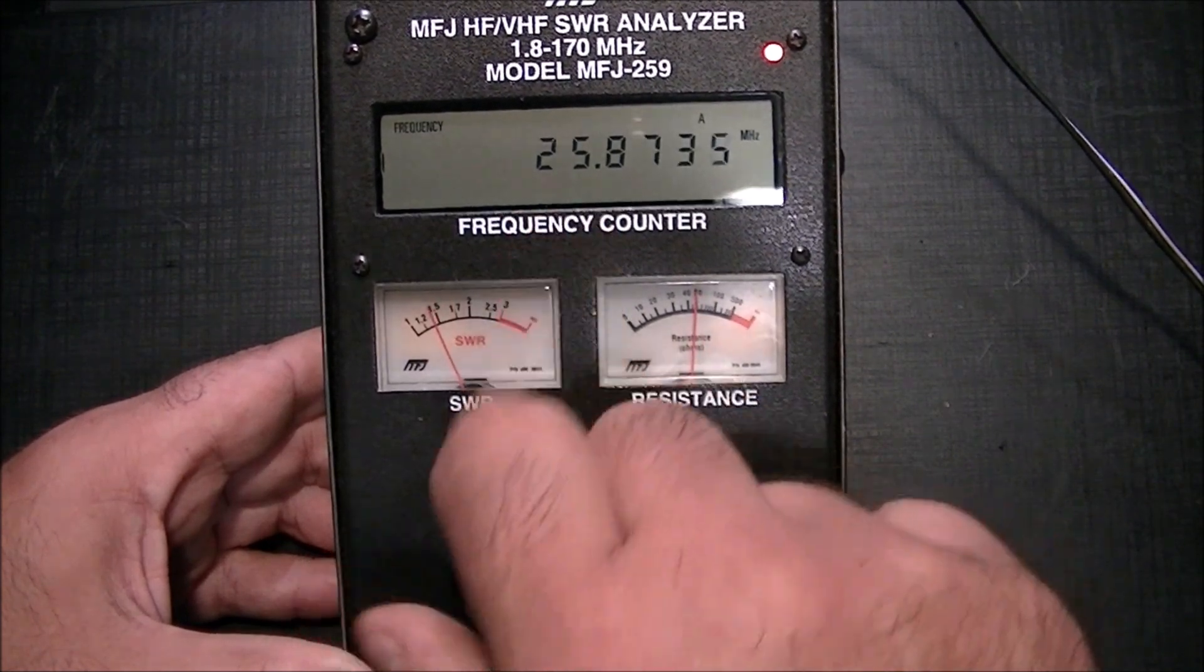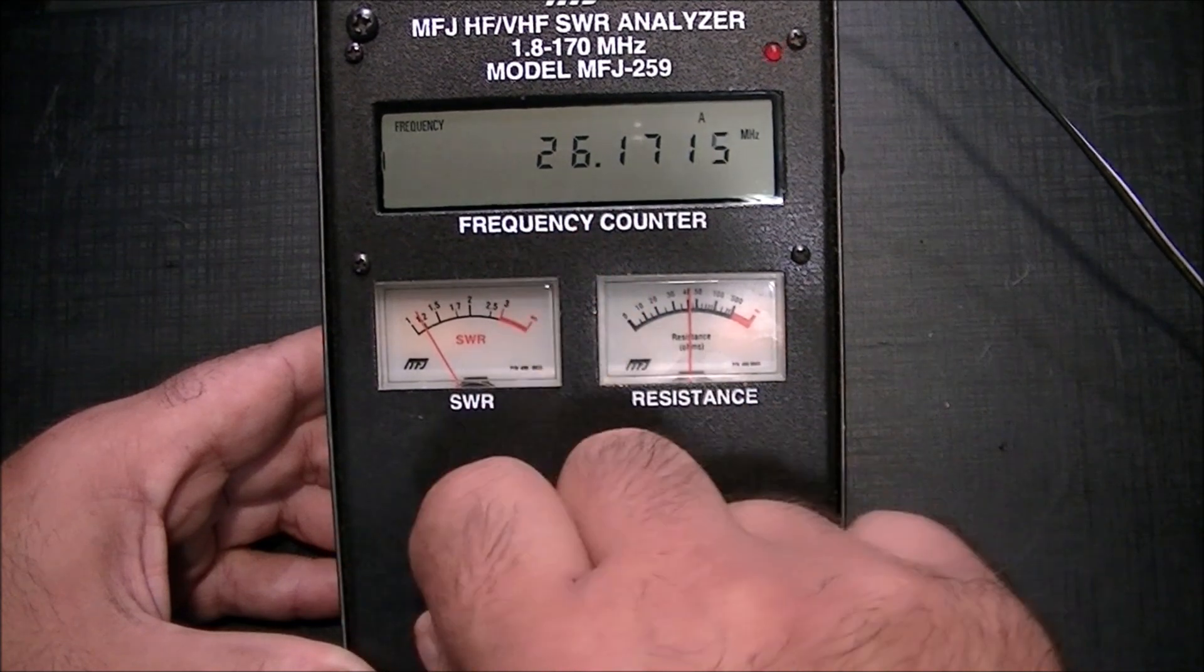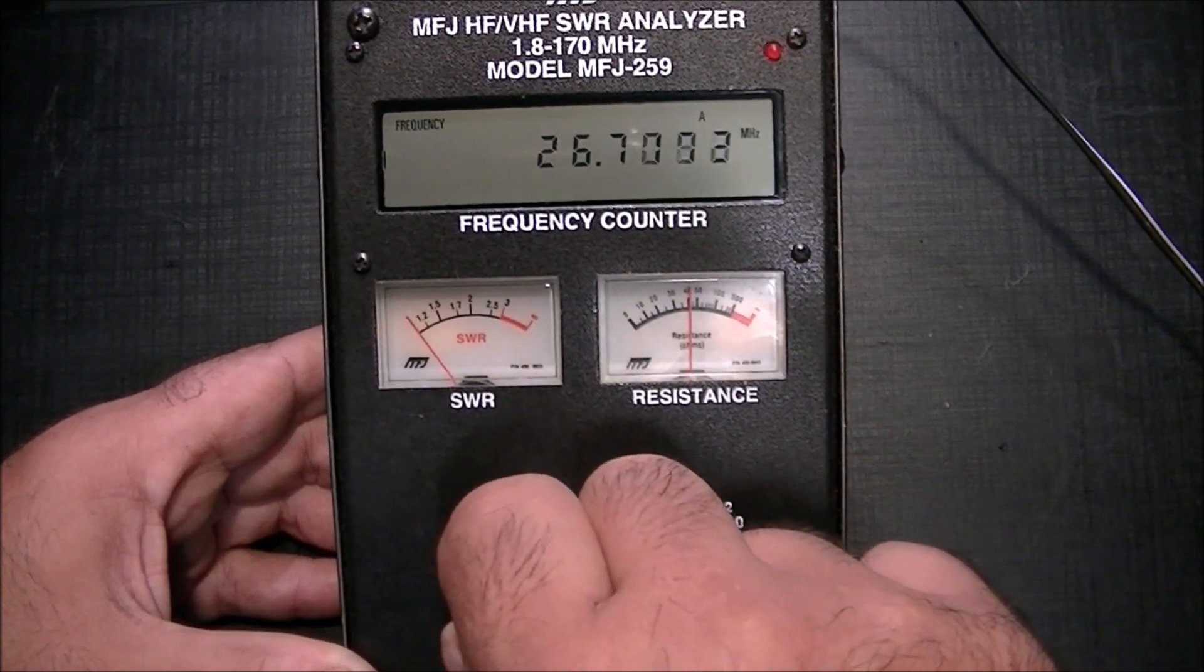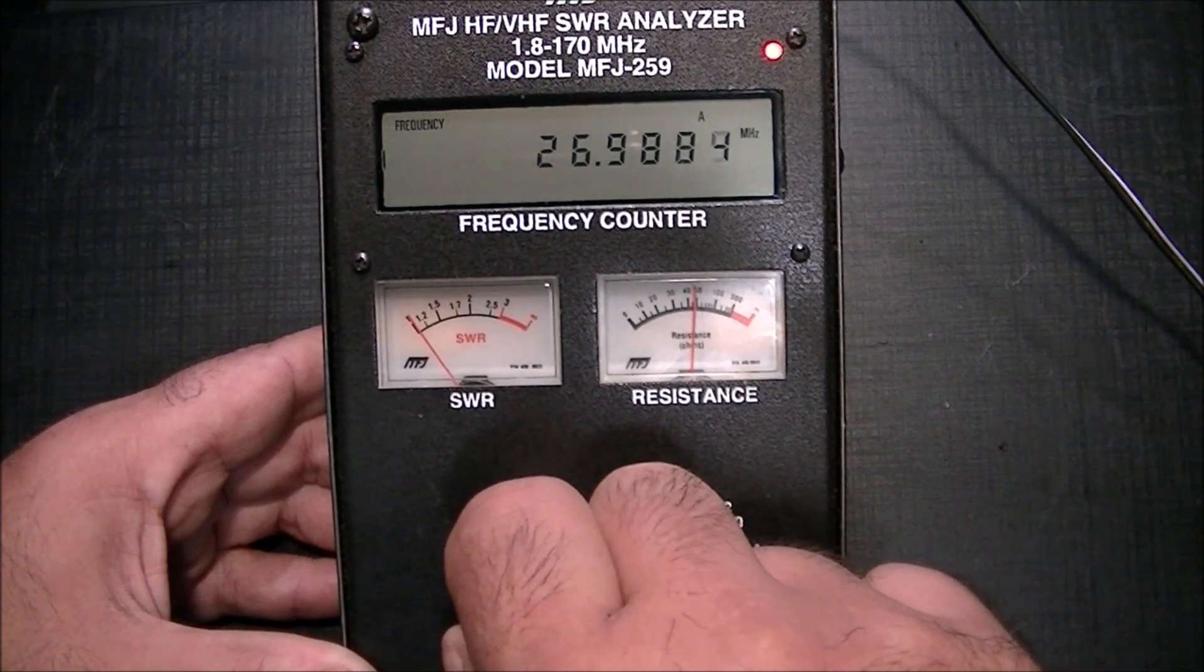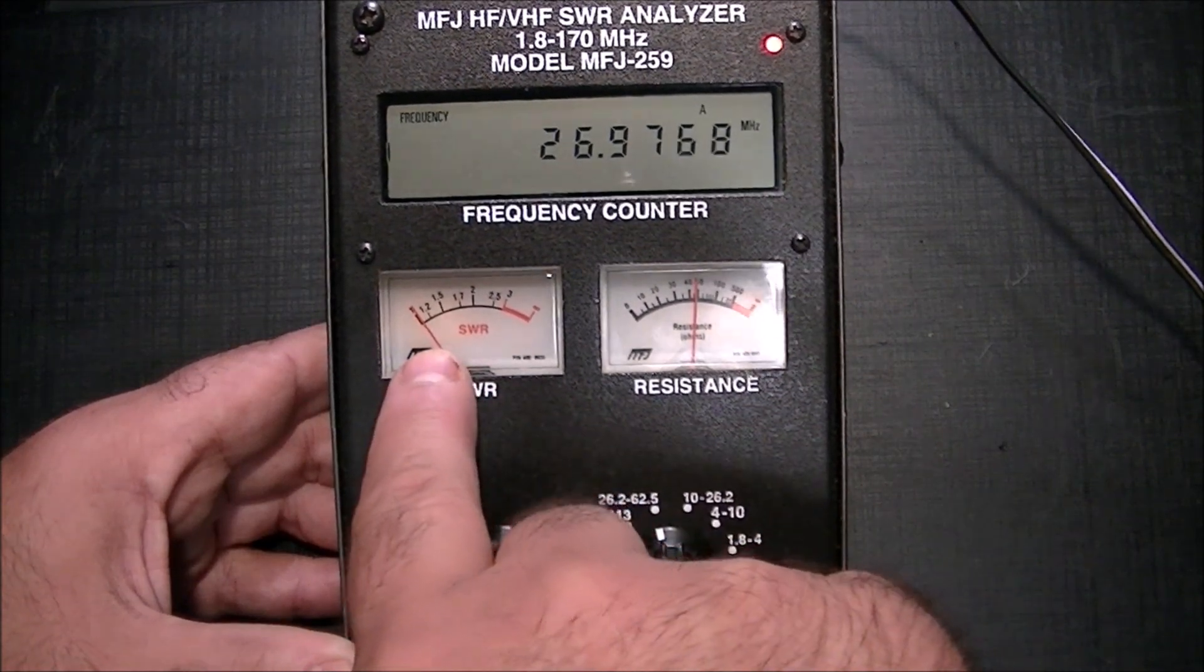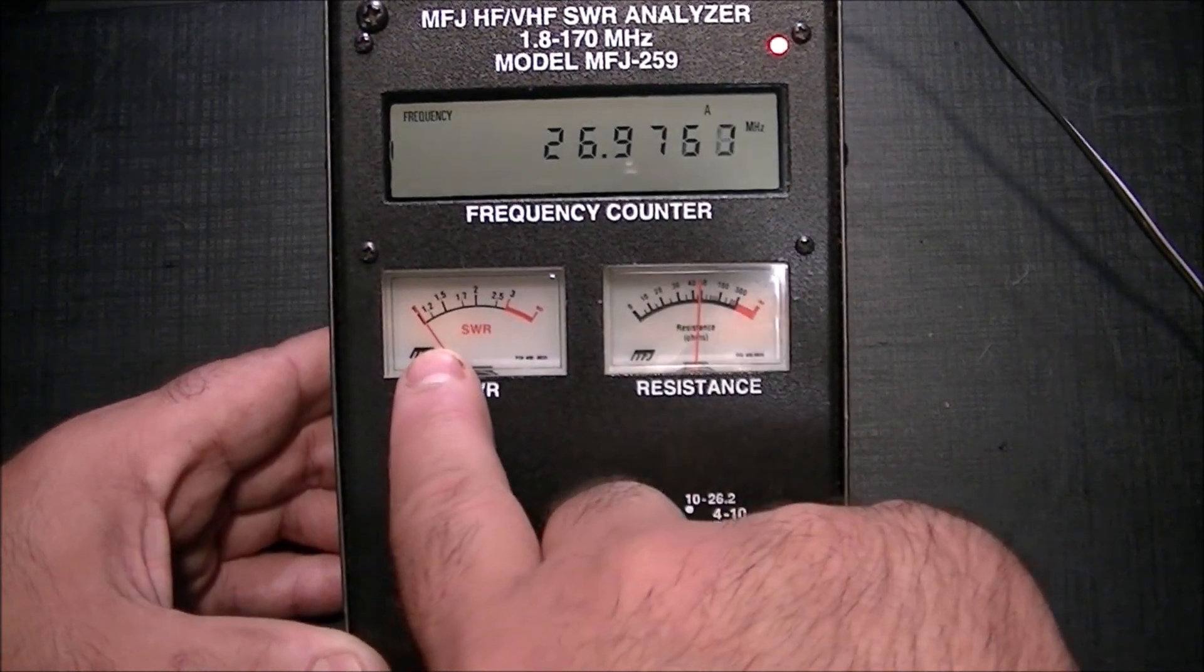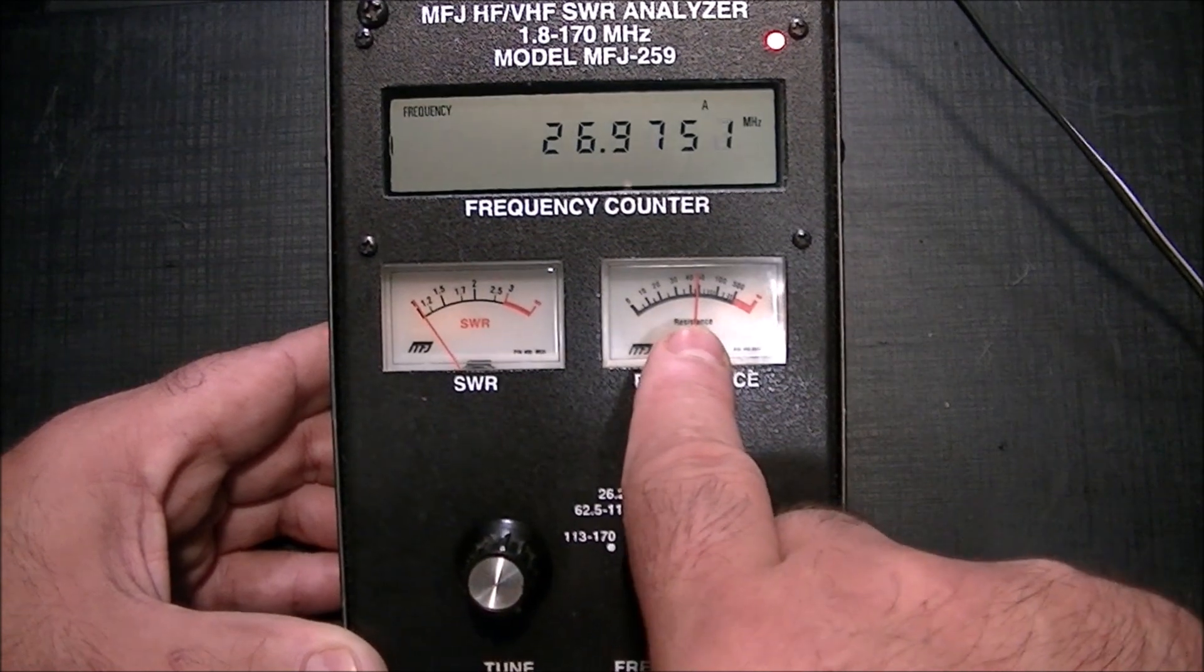So the antenna obviously, if you look at this demonstration, the Antron 99 is certainly well within range of functional use in the CB band. As I get into the CB band here, 26.965 around there.